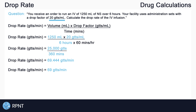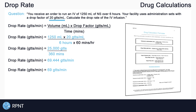As long as you pick out the information that you need, plug it into the formula, convert any units needed, and remember to round, that's it. If you want to download a free drug calculation formula sheet — which has this drop rate formula along with a few other useful ones — I've placed a link in the video description. If you have any questions, please let me know in the comments, or you can visit rpnt.ca for more help.